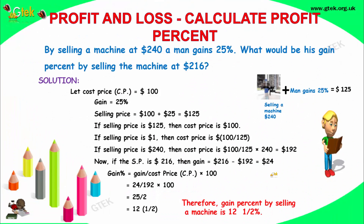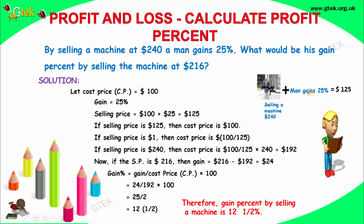We'll move to the next problem. By selling a machine at $240, a man gains 25%. So what is the cost price? If the cost price is $100 and the gain is 25%, the selling price will be $125.